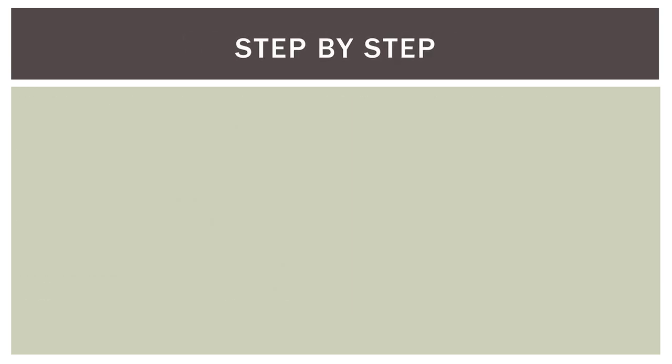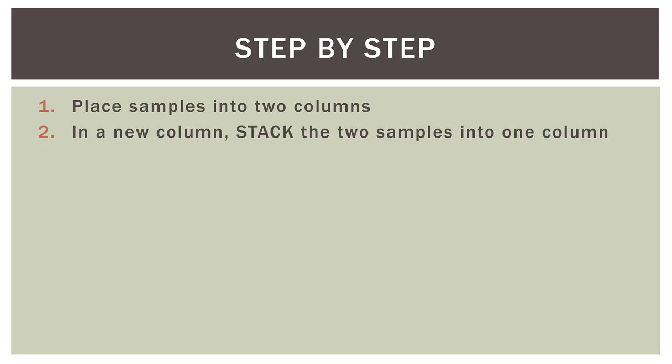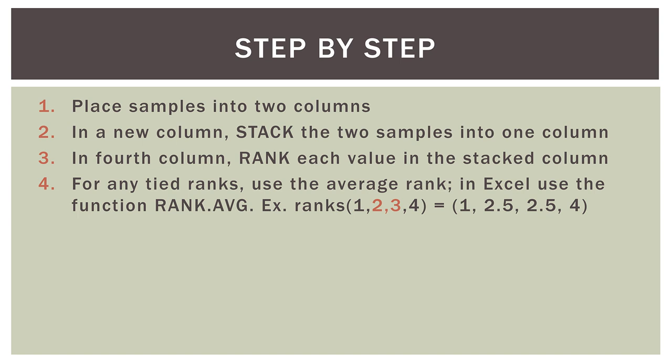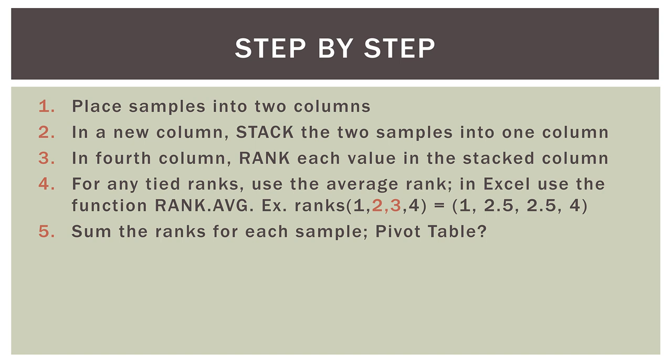A quick step-by-step review of how we do this: we place our samples into two columns, then create a new column where we stack them together on top of each other. In a fourth column, we rank each value in the stacked combined column using the rank.average function in Excel. For any tied ranks, we use the average rank — for example, if the second and third numbers are tied, Excel will assign them both a rank of 2.5, because the average of two and three is 2.5. Then we sum the ranks for each sample.